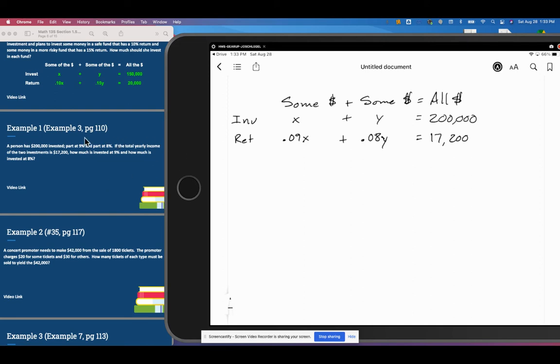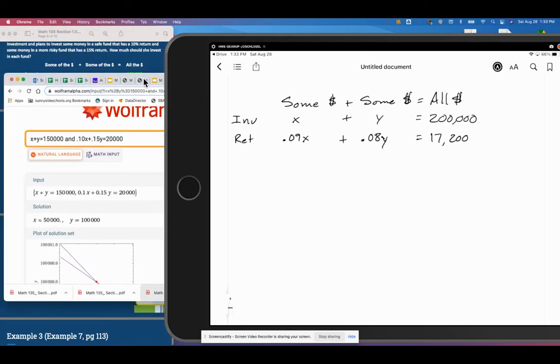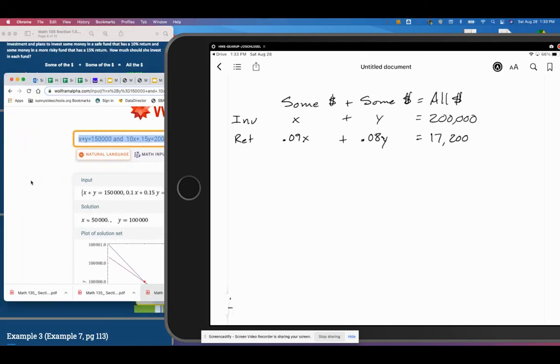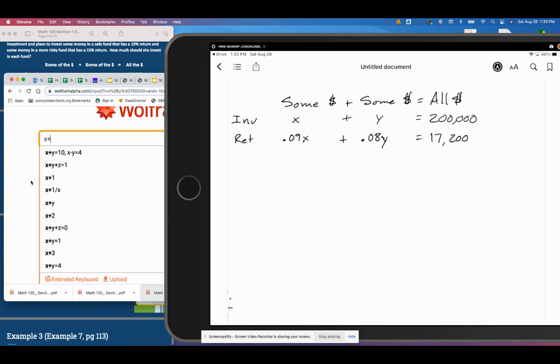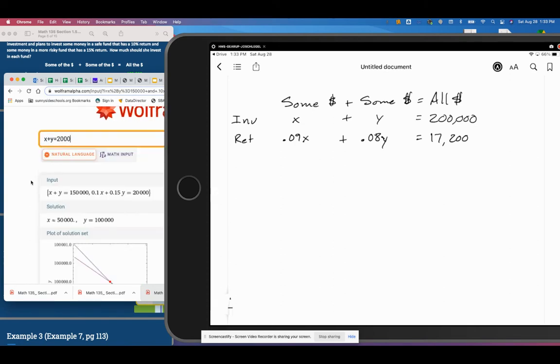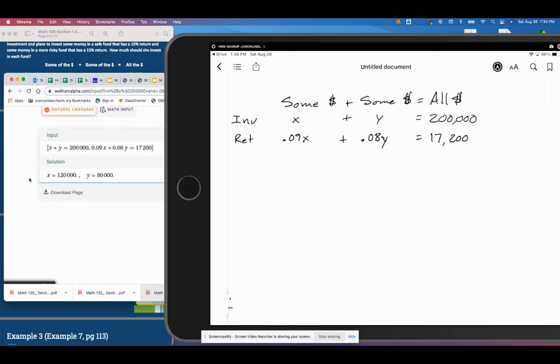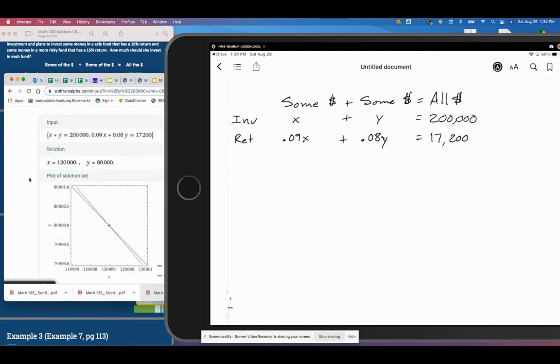So as I've shown with the examples previous to this one, we're going to use Wolfram. And we've got X plus Y equals 200,000. Always got to count my zeros. And 0.09X plus 0.08Y equals 17,200. So we can see that X is $120,000 and Y is $80,000.